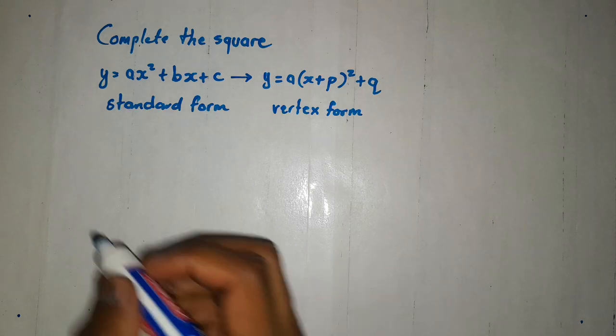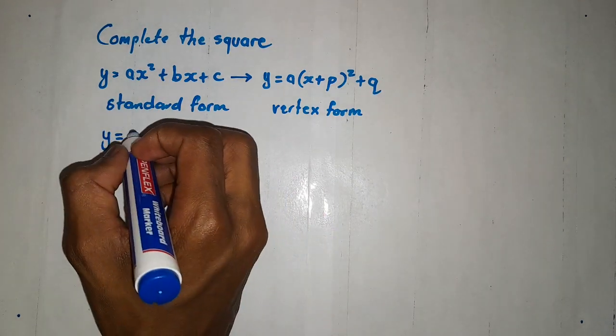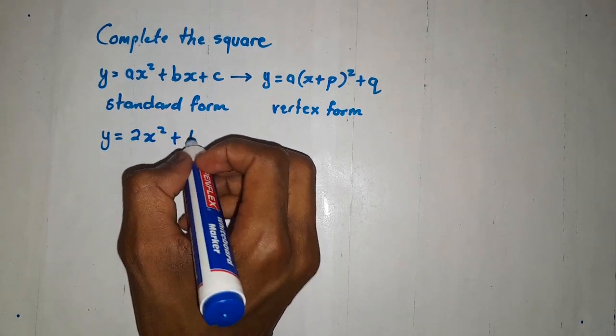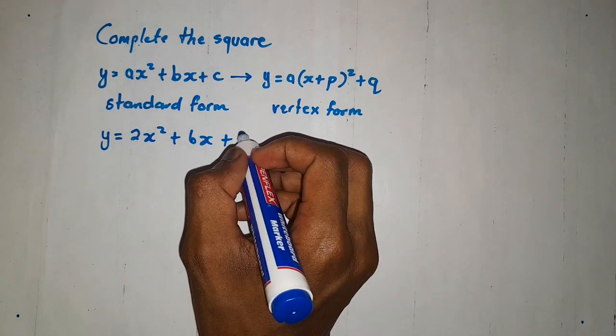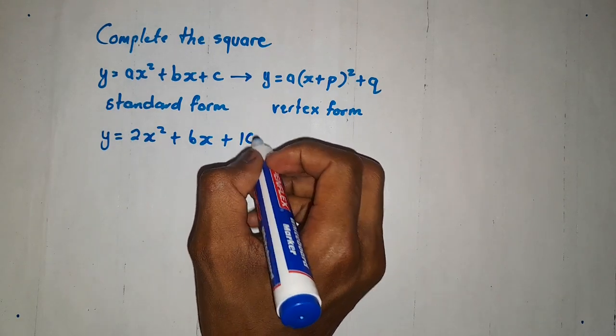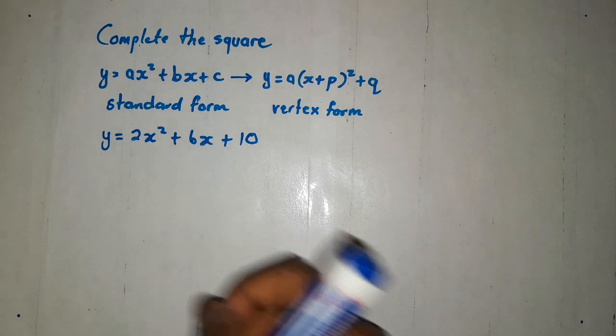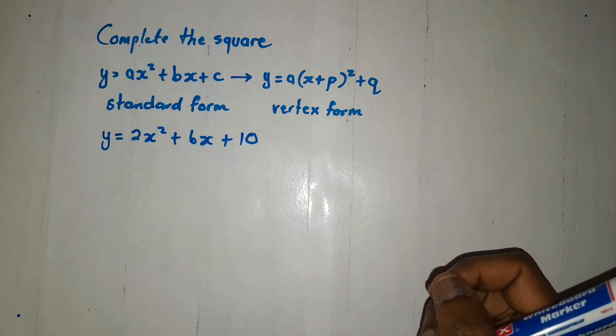Let me show you how. Suppose if I were to give you 2x squared plus 6x plus, let's say, 10. Then I ask you a question to say, complete the square for this given. How are you going to complete the square for this one?